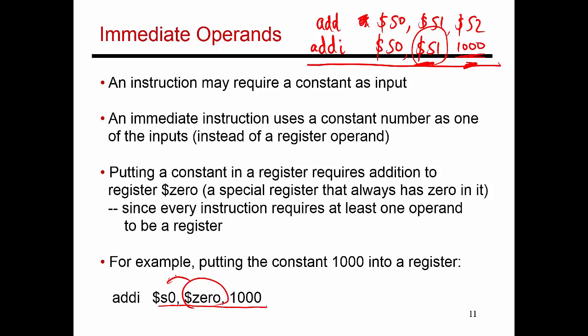Unfortunately, there's no easier way to do it because I have to use one of these two kinds of instructions, either an instruction that has three register operands or an instruction that has two register operands and one constant or immediate value.